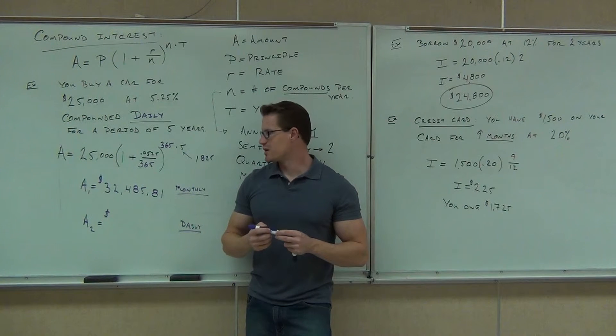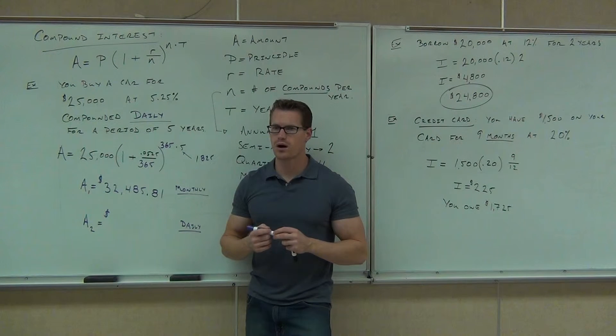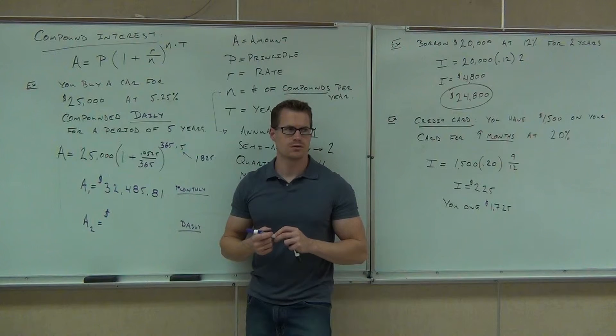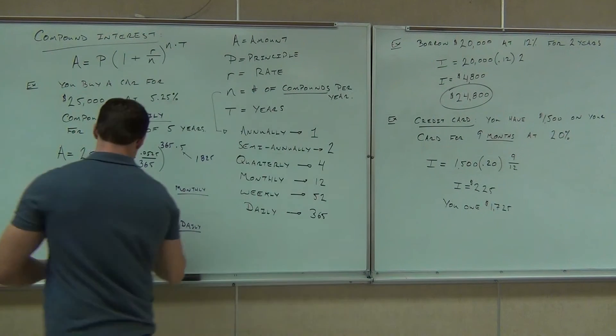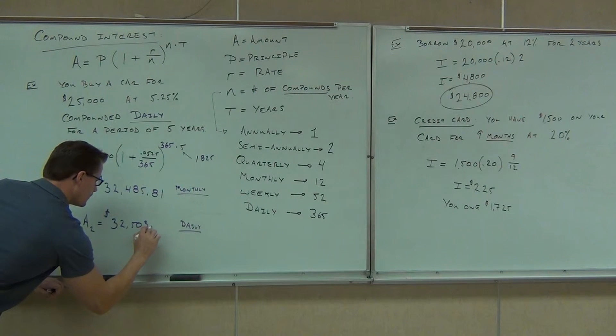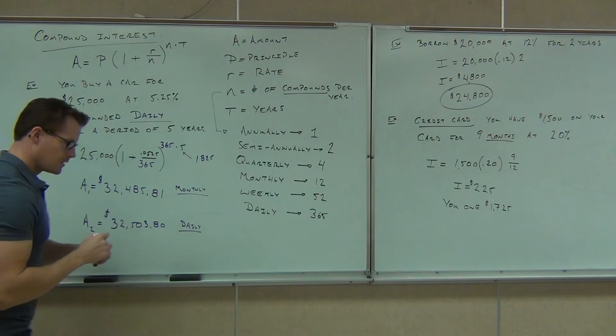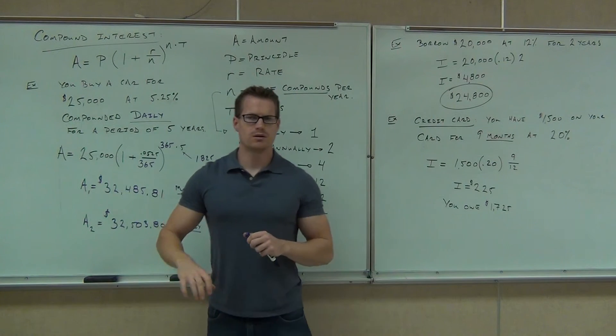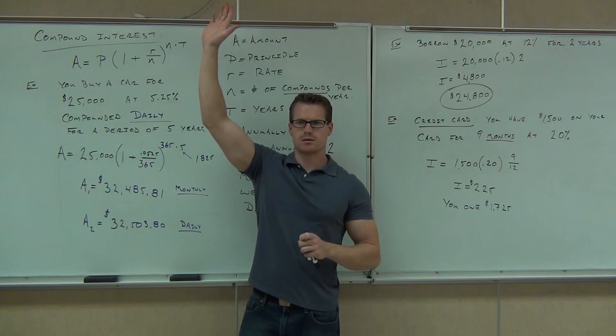That's what you do last. So you get $32,500 or something. $32,530.80. By a show of hands, if you had a calculator, how many of you got that? Good. Now, I want you to look at the difference.